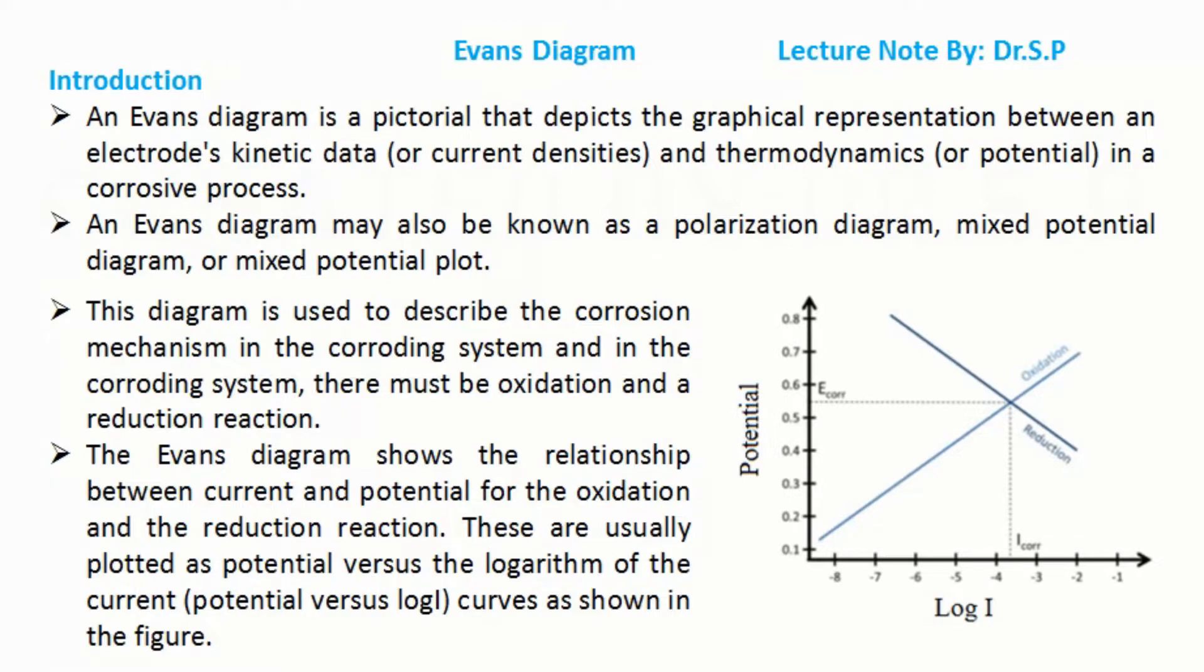This diagram is used to describe the corrosion mechanism in the corroding system. In the corroding system, there must be oxidation and a reduction reaction.